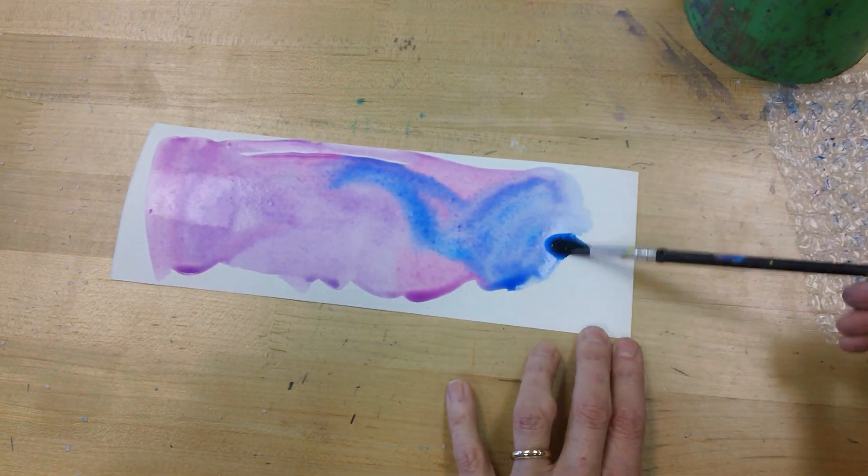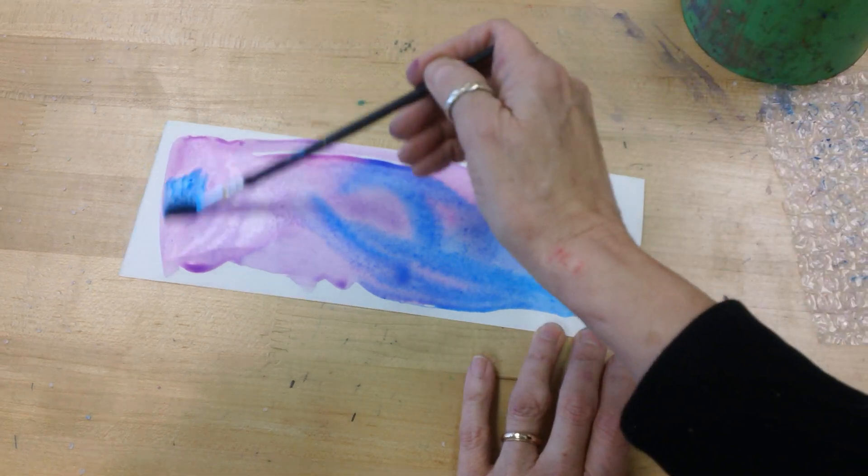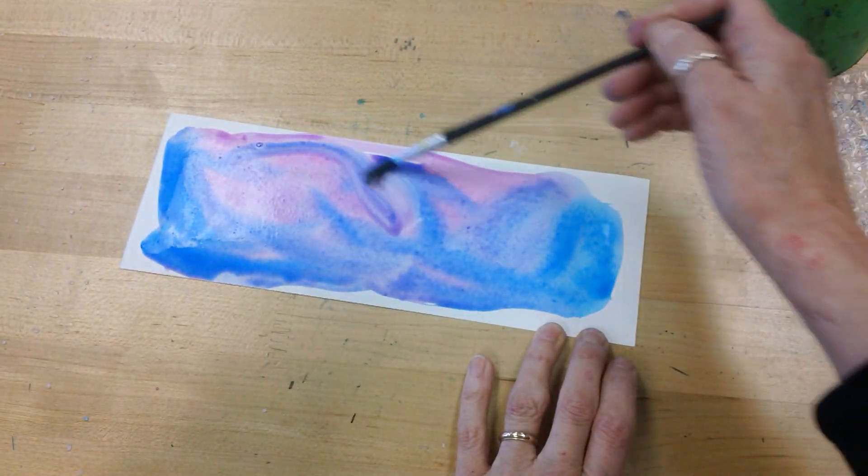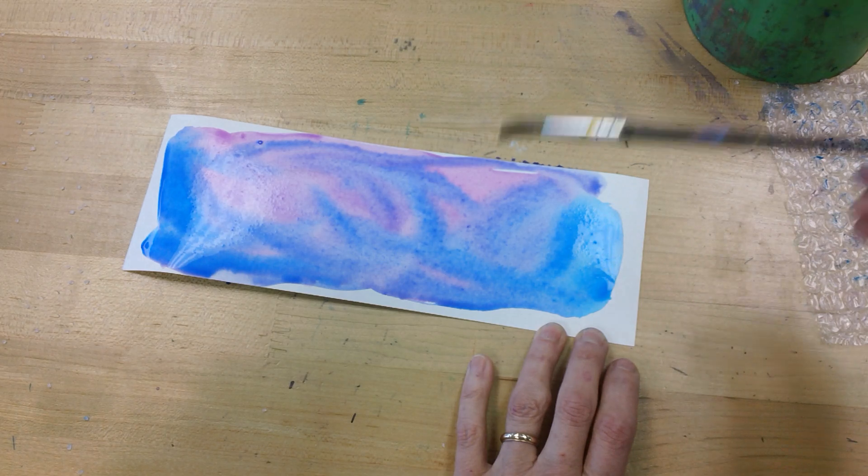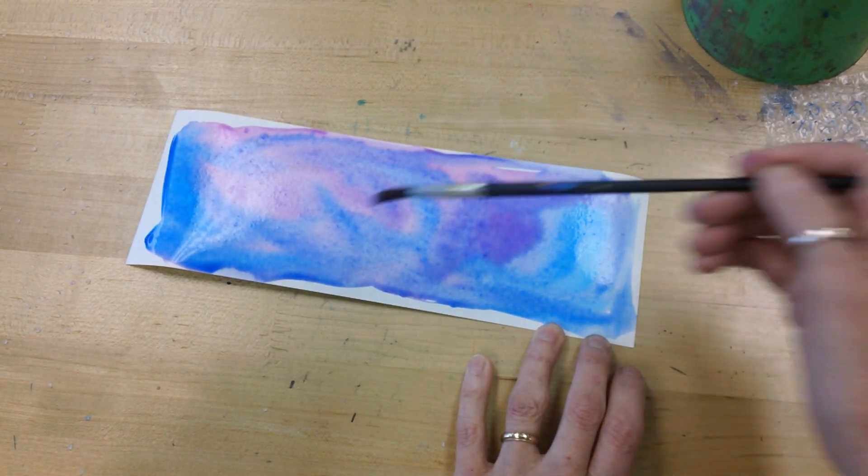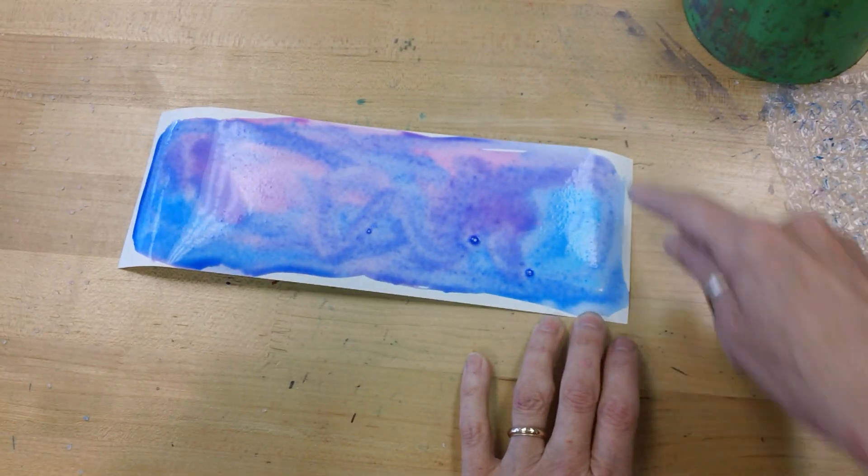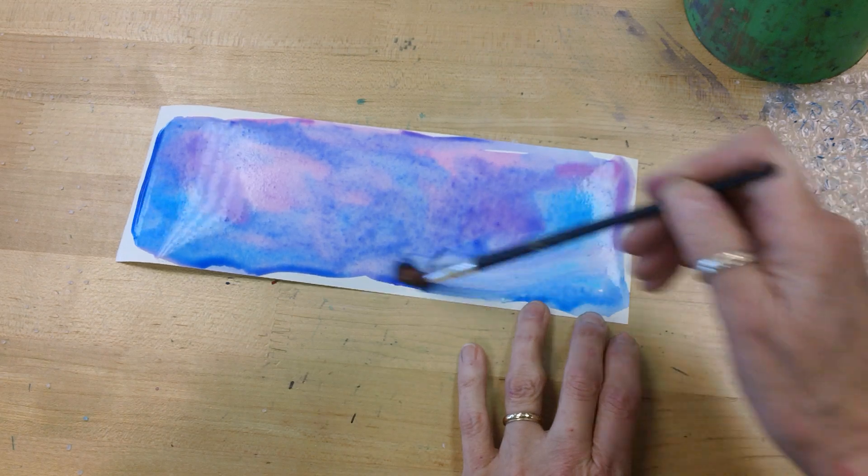Now, because the liquid watercolor is very wet, which is a great thing, you can't put the bubble wrap on this right away. We have to blot the watercolor so it dries a bit. You can see I didn't fill everything up - that's okay.